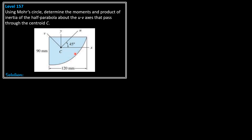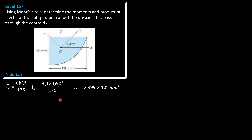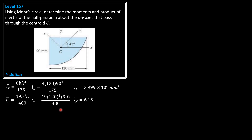For our solution, I̅x, remember the formula derived in the preceding levels, is 8bh³ over 175. So, 8 times 120 times 90 cubed over 175. Expressing the answer in scientific notation, I̅x is equal to 3.999 × 10⁶ mm⁴. I̅y, on the other hand, is 19b³h over 480. So, 19 times 120 cubed times 90 over 480, which equals 6.156 × 10⁶ mm⁴.